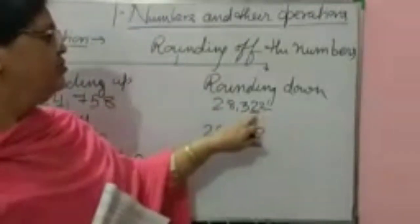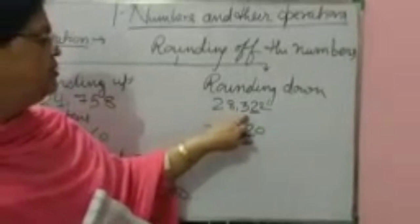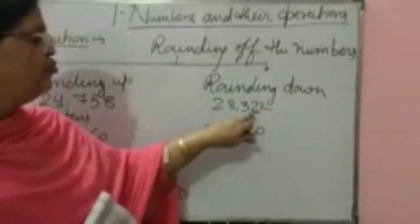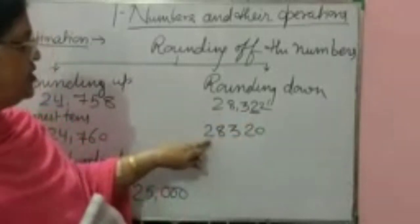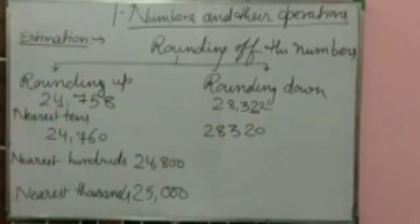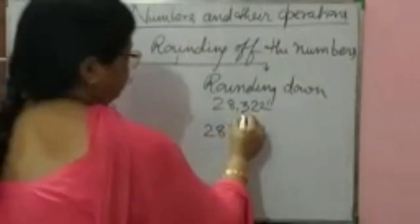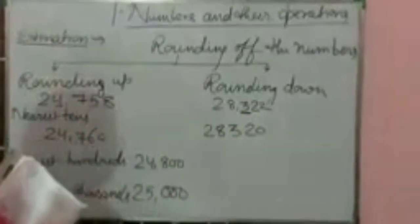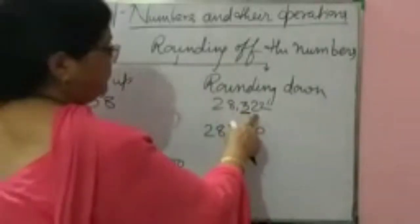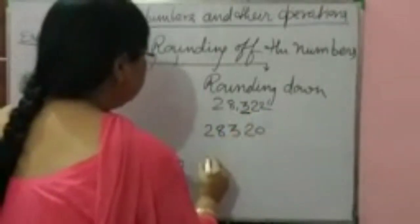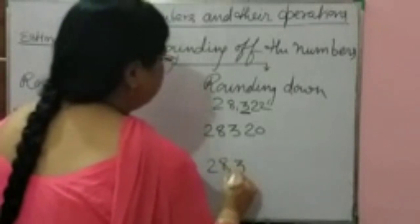If the digit to the right were 5, the new number would have been 28,330. But here the digit is less than 5, so 2 will not change and the new number is 28,320. For nearest hundreds, underline the digit in the hundreds place — 3 is in the hundreds place. Just after 3, to the right side, is 2. Since 2 is less than 5, 3 will not change. The new number is 28,300.